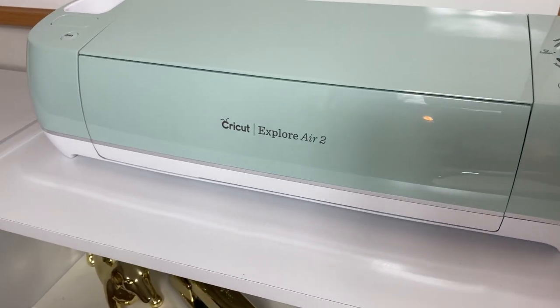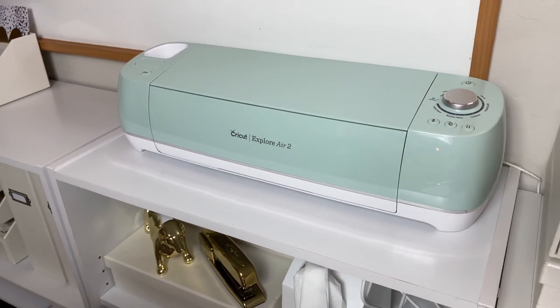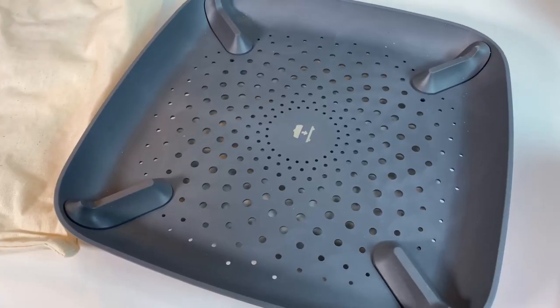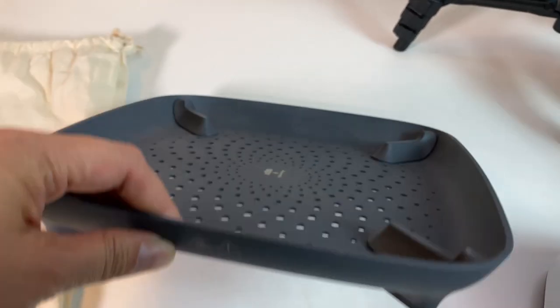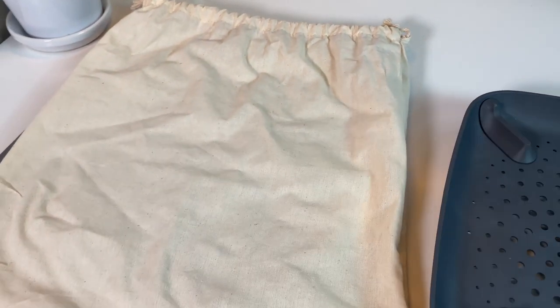The Cricut Explore Air 2—I love this color. They do have other colors. I have it here in my crafting area. EasyPress 2, I have the 9x9, and then the EasyPress mat. The EasyPress 2 comes with this stand, which is fantastic, especially if you're using a table, and then it also comes with a bag.